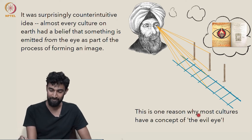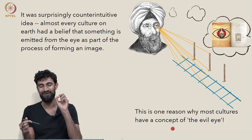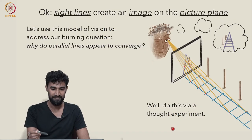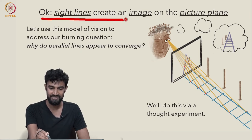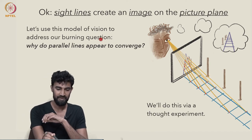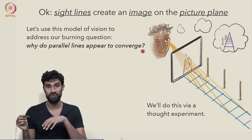And that might be one reason why most cultures have a concept of an evil eye, something that you're sending out when you're looking, when you're viewing something. But to come back to our problem, sight lines create an image on the picture plane. So this model, we can use it to address our question: why do parallel lines appear to converge?